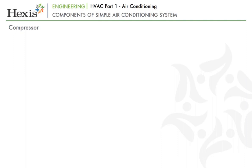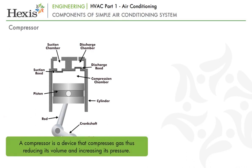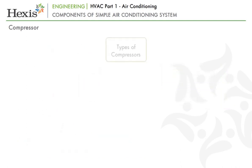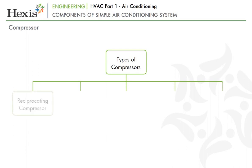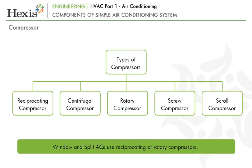Most air conditioning systems employ the vapour compression cycle, including the window and split air conditioners we use at home. The first primary component is the compressor — a device that compresses gas, reducing its volume and increasing its pressure. In an air conditioning system, the compressor draws low pressure gas from the evaporator and compresses it to high temperature before supplying it to the condenser. Compressors used in air conditioning systems may be classified into reciprocating, centrifugal, rotary, screw, and scroll types. Window and split ACs usually have reciprocating or rotary types.